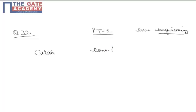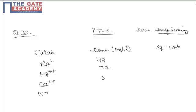Question number 32 of part test 1 is from environmental engineering. In this question, various cations are given with their concentration in milligrams per liter and their equivalent weight. For Na+, Mg2+, Ca2+, and K+, the concentrations are 49, 72, 59, and 12 respectively, and the equivalent weights are 23, 12, 20, and 39 respectively.